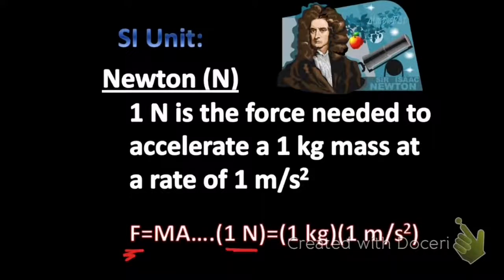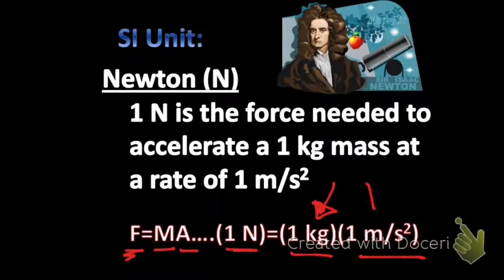And that's just directly derived from this formula. Force, which we measure in newtons, is equal to mass times acceleration. Mass is measured in kilograms, and acceleration is meters per second squared. So if you take a 1 kilogram mass and push on it so that it accelerates at 1 meter per second squared, you have 1 newton.